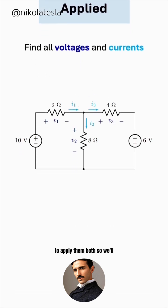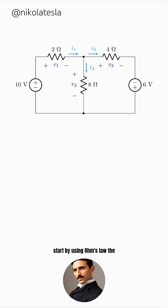So, we'll start by using Ohm's law. The voltage across each resistor is its resistance times the current through it. So, V1 is 2I1, V2 is 8I2, and V3 is 4I3.